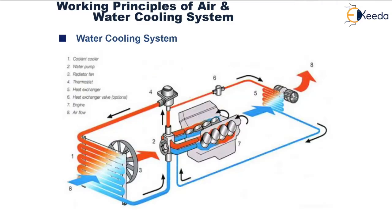Now let us look at the liquid cooled system. In this method of cooling, the cylinder walls and heads are provided with cooling liquid jackets through which the coolant will flow. It carries away heat from the combustion chamber walls, gets heated, and is then brought back to normal operating temperatures by passing a draught of air over it. The coolant carries heat from the engine, and in turn a draught of air carries heat away from the coolant.